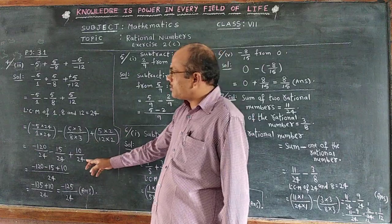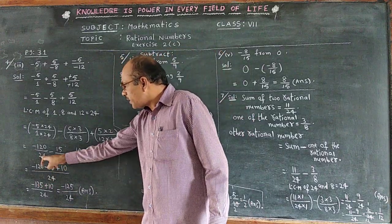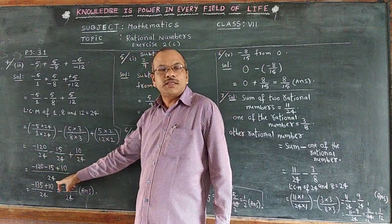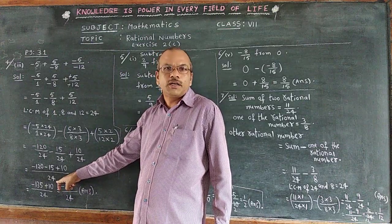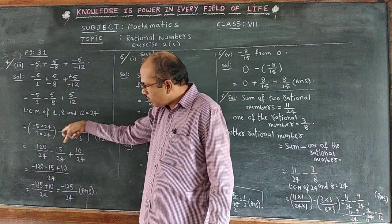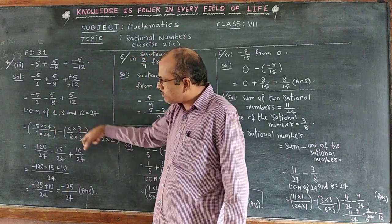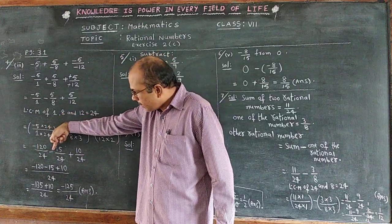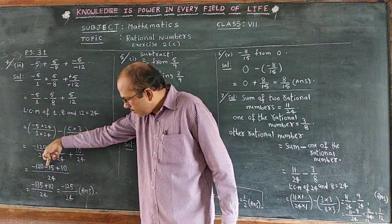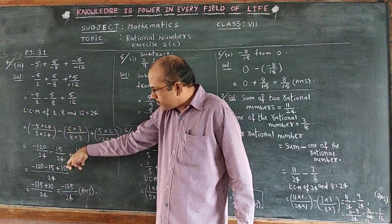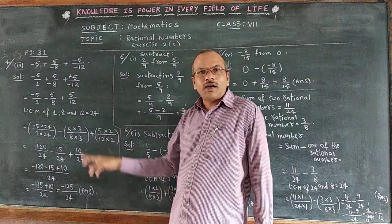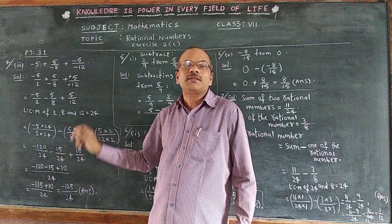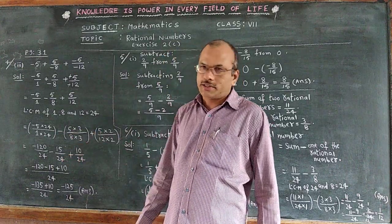The final step: the common denominator is 24, so 24 is written as the common denominator. The numerators left are minus 120, minus 15, and plus 10. All those numerators with their respective symbols are written in the numerator part.